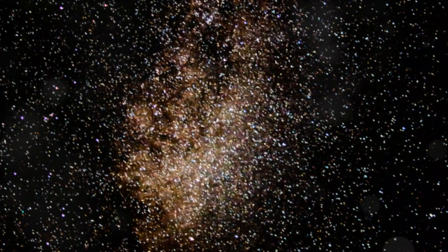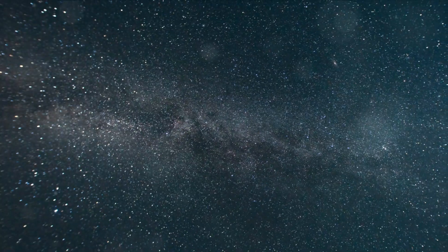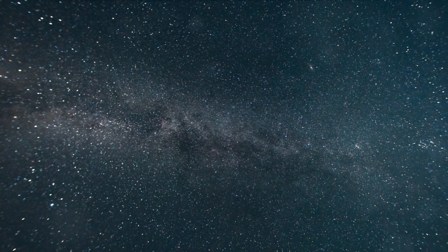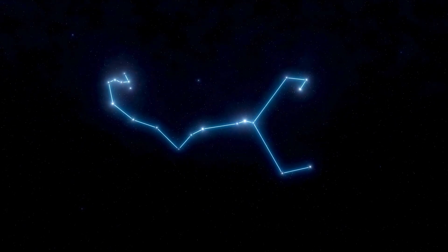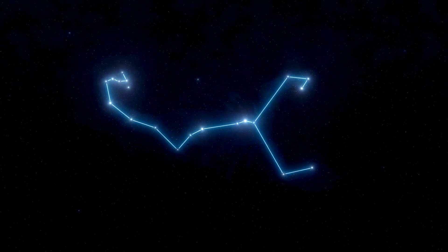We've learned that constellations are not just random stars but carefully mapped groupings that tell stories and guide us in our exploration of the universe. We've discovered that there are 88 constellations in total, each with its unique shape and mythology.